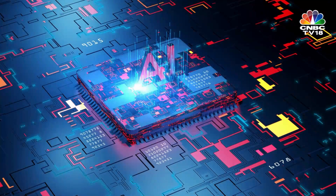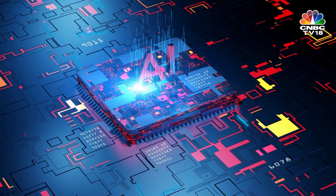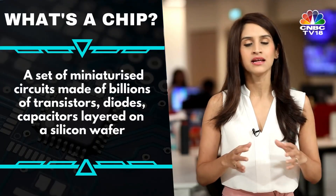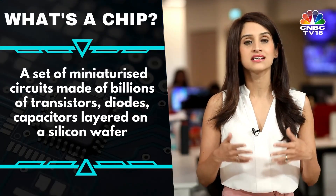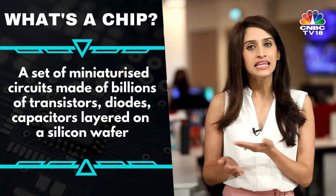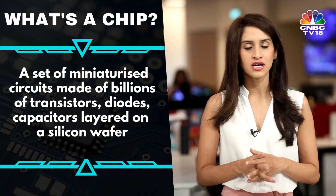When we say semiconductors, we're often talking about chips or integrated circuits. What is a chip? A chip is a miniaturized circuit made up of billions of transistors, diodes, and capacitors layered on a silicon wafer.